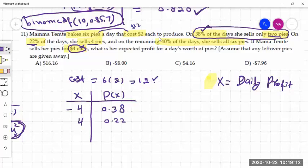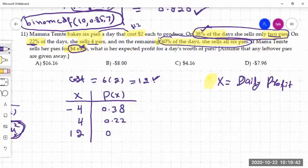Then on 40% of the days, she is selling all six pies here. So when she sells six pies, her earning would be six times four is twenty-four dollars. So twenty-four dollars she earns, but out of twenty-four, her cost is twelve dollars. So the remaining twelve dollars is her profit. So twenty-four minus twelve is twelve dollars. And that happens for 40% of the days.